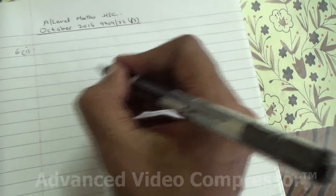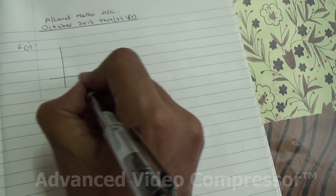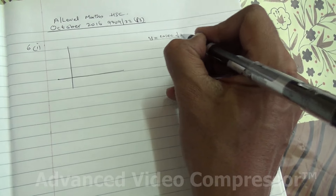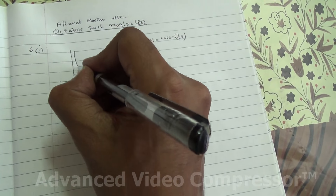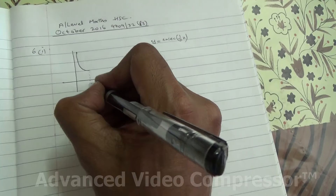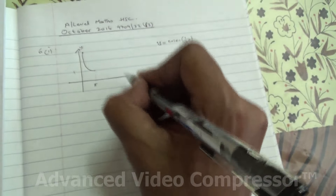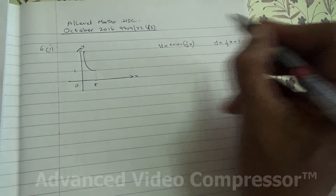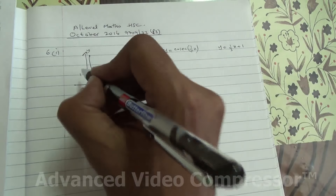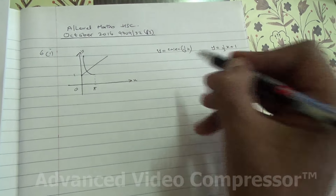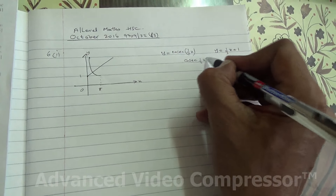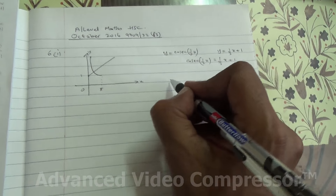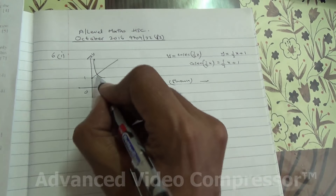For question number 6, first part, we need to sketch the graph of y equals cosec of x. Remember the graph goes like this, and at pi this is going to be one on the y-axis. The other graph is y equals one third x plus one, so the y-intercept is one and the graph goes like this. The sketching shows one root.